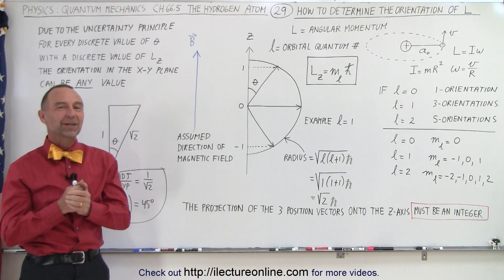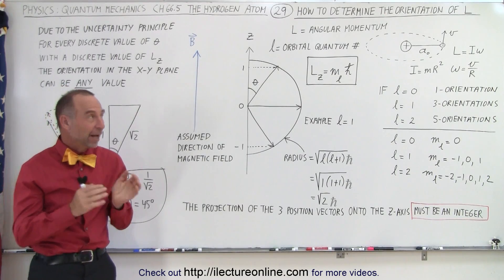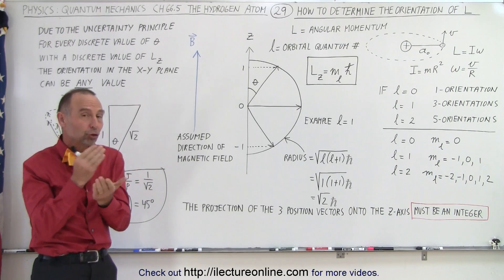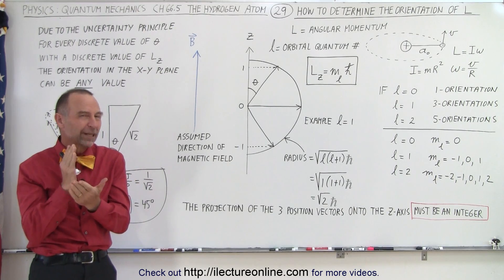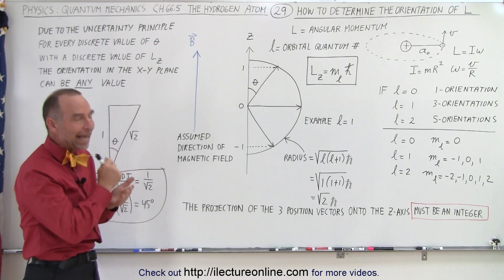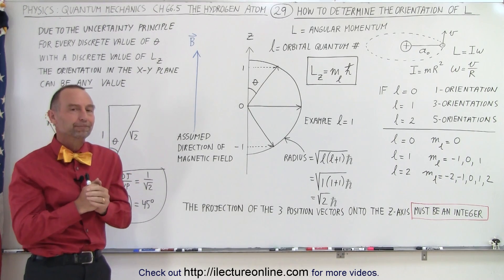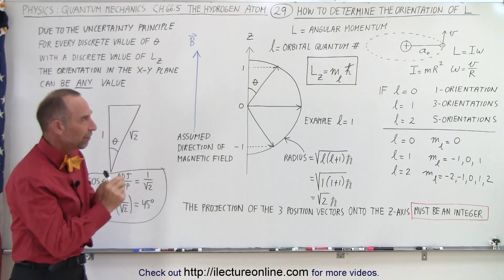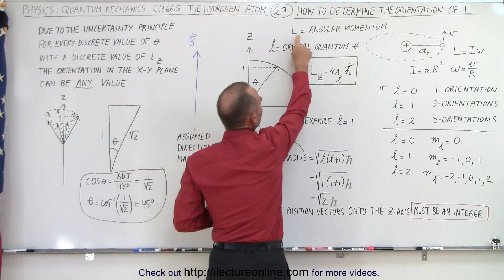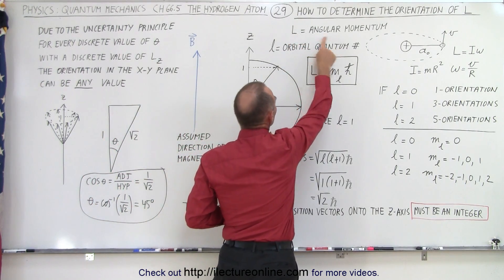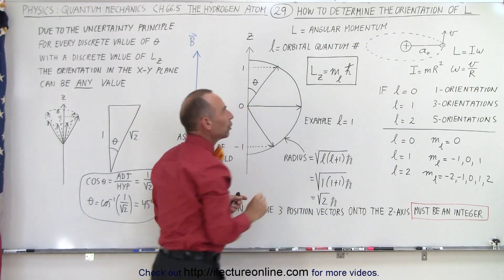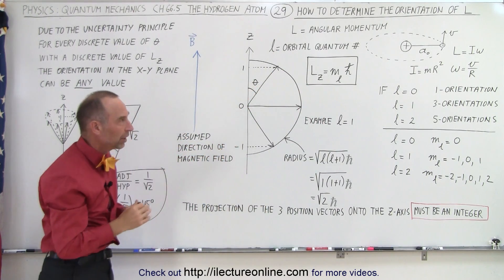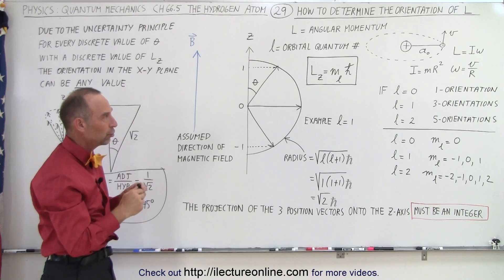Welcome to my lecture online. We're going to address the concept of how to determine the orientation of the angular momentum, L — capital L. There's a difference between capital L, which is called the angular momentum, and small l, which is called the orbital quantum number, but there's a very strong relationship between the two.